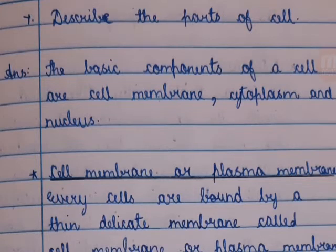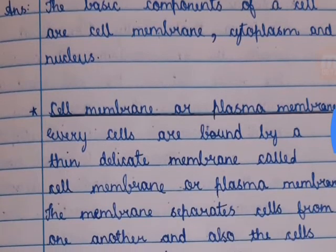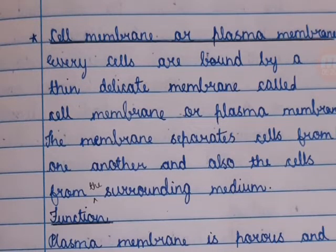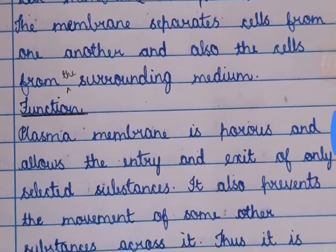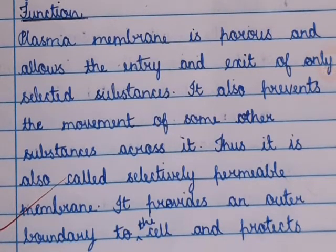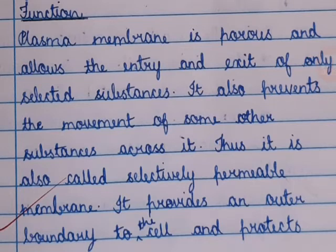Describe the parts of a cell. Answer: The basic components of a cell are cell membrane, cytoplasm, and nucleus. Cell membrane or plasma membrane — every cell is bound by a thin, delicate membrane called the cell membrane or plasma membrane. The membrane separates cells from one another and from the surrounding medium. Plasma membrane is porous and allows entry and exit of only selected substances; it prevents movement of some other substances across it. Thus, it is called selectively permeable membrane. It provides an outer boundary to the cell and protects it from injury.